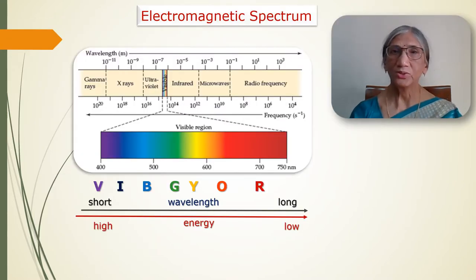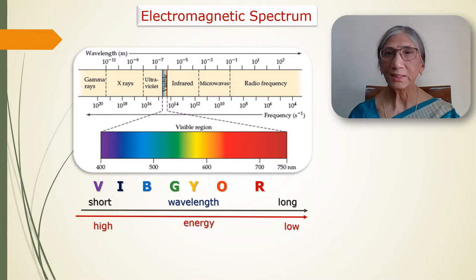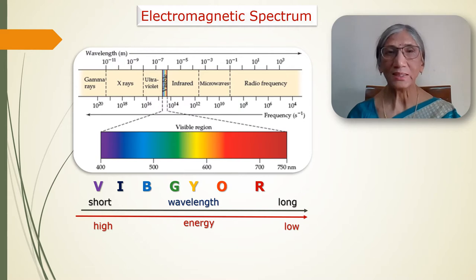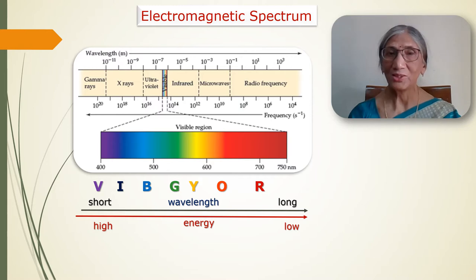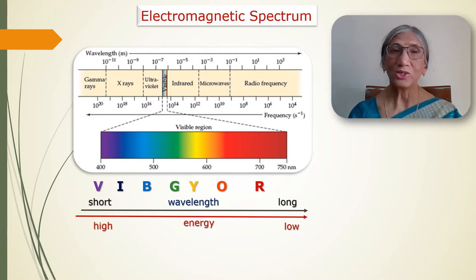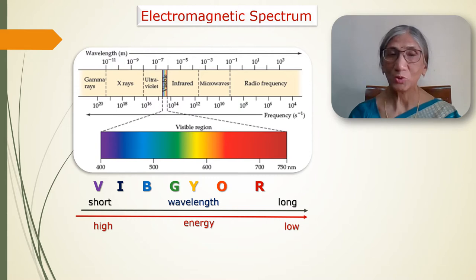The electromagnetic spectrum includes all types of electromagnetic radiations. On the basis of characteristics of these radiations, the complete electromagnetic spectrum is divided into different parts: gamma rays, X-rays, ultraviolet radiations, visible radiation, infrared radiations, microwave radiations, and radio frequency radiations. The human eye can see only a small part of this electromagnetic spectrum — the visible radiation — which constitutes white light, and this white light consists of seven colors.